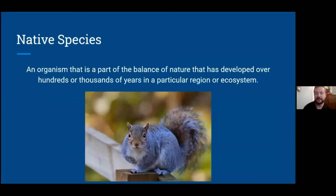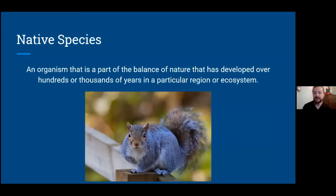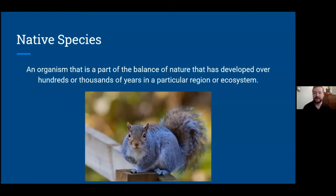We'll start with a quick but important environmental concept: native species. Native species are organisms that have been part of a specific ecosystem and evolved in that area over hundreds of thousands of years. They've been interacting with and evolving around the same group of plants and animals, allowing them to balance the ecosystem through nutrient cycling, seed dispersal, and predator-prey relationships.